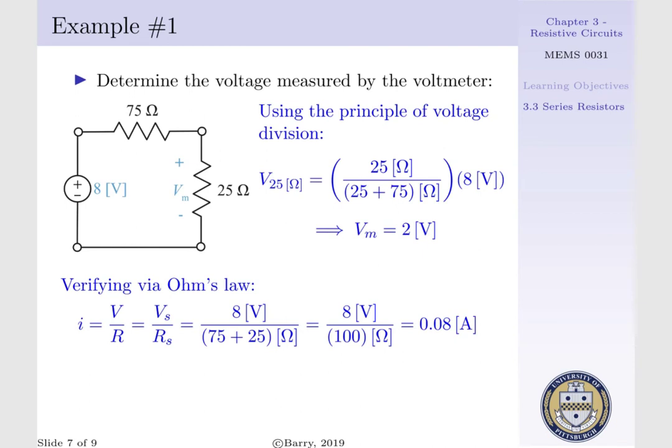Thus our current flowing through the circuit would be equal to 8 volts per 100 ohms which is equal to 0.08 amps.